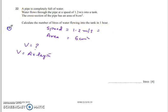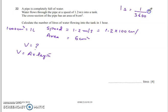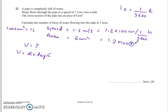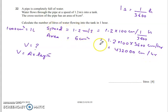We know 1000 centimeter cubed equals 1 liter, so I will convert 1.2 meters per second into centimeters per hour. One meter equals 100 centimeters, and one second equals 1/3600 of an hour. So 1.2 × 100 × 3600 = 432,000 centimeters per hour. This is our speed, which represents the length per hour. The area is already given, so I substitute both values.